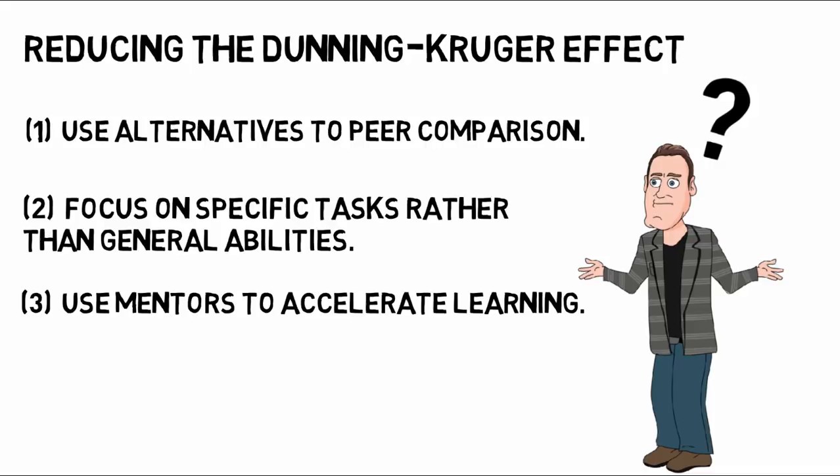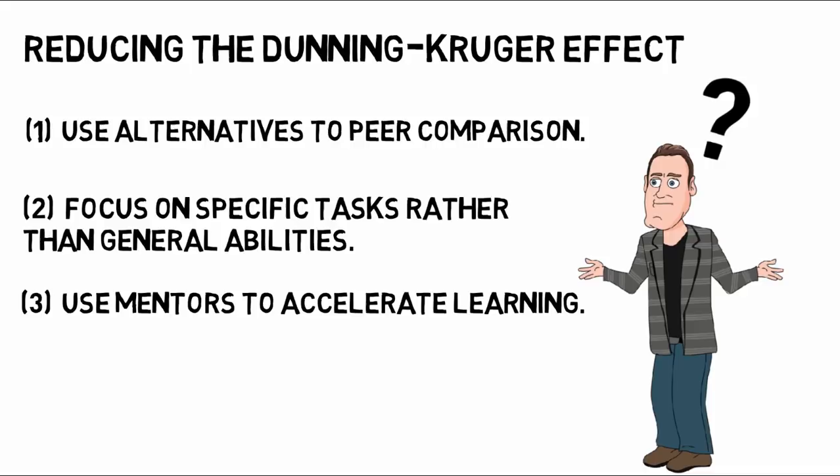In summary, the Dunning-Kruger effect is a form of cognitive bias that is largely a result of using peer comparison. When we compare ourselves to others, we risk the consequences of making inaccurate judgments of our own abilities.